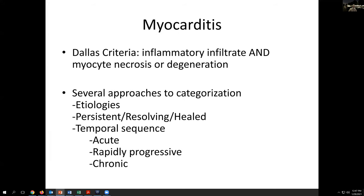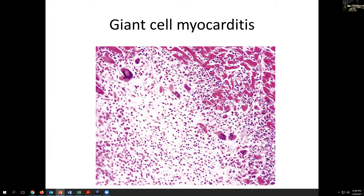One of the things we're looking at in a cardiac biopsy is to detect myocarditis. The Dallas criteria required that to make that diagnosis, you had to have both an inflammatory infiltrate and evidence of myocyte necrosis or degeneration. Using those criteria, there are several approaches to categorize these lesions, looking at temporal sequences, potential etiologies, and evolutionary stage. One of the more common features we might see is giant cell myocarditis, where we see several giant cells that may be histiocytes or degenerating myocytes with large multinucleated cells, along with dropout of myocytes, evidence of myocyte damage, and associated inflammatory infiltrate, meeting the Dallas criteria.